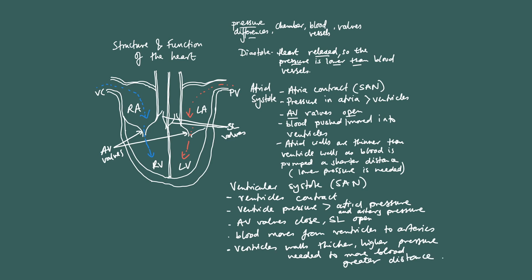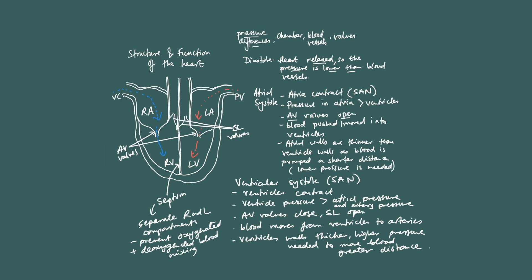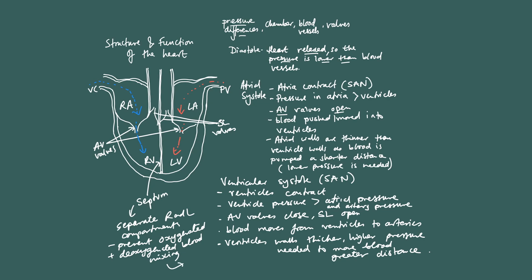For the same reasons, we can compare the left ventricle wall being thicker than the right ventricle wall. We also have a separation of the right and left parts of the heart — this is the septum. The septum is there to separate the right and left compartments, because what we need to do is prevent oxygenated and deoxygenated blood from mixing.